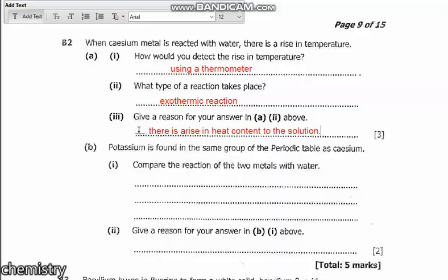Potassium is found in the same group of the periodic table as calcium. Compare the reaction of the two metals with water. Now remember, calcium and potassium are found in the same group, but calcium is found down below potassium. That means, in group one, according to periodic trends, as you go down the group, the metals become more reactive. That means calcium is more reactive than potassium.